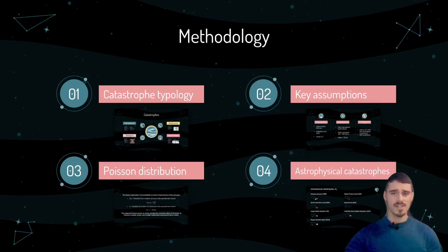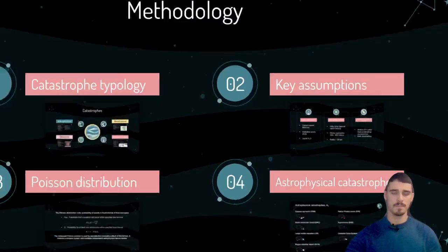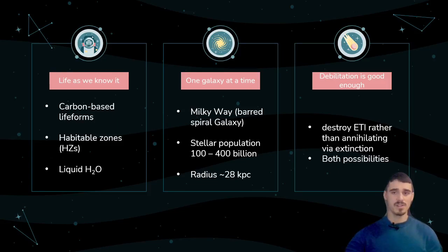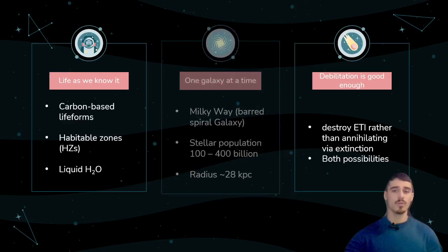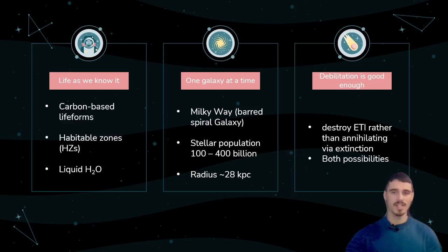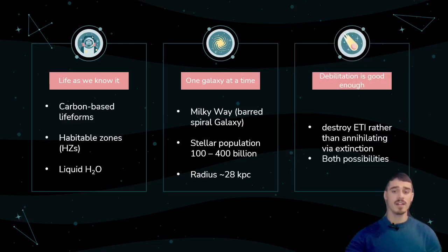Now let's look at some of the key assumptions fixed at the beginning of the paper. The research is done on three main points: the paper only looks at carbon-based life forms in the habitable zone with liquid water available; we concentrate on our Milky Way with a stellar population of around 100 to 400 billion stars, with a radius estimated at 28 kiloparsecs; and we analyze the difference between civilization-destroying and species-extinction threats. Debilitation that doesn't lead to extinction is seen as good enough.